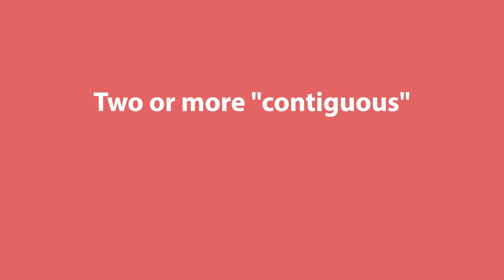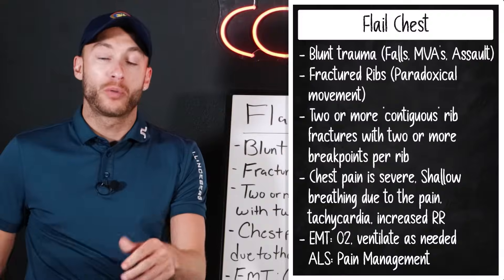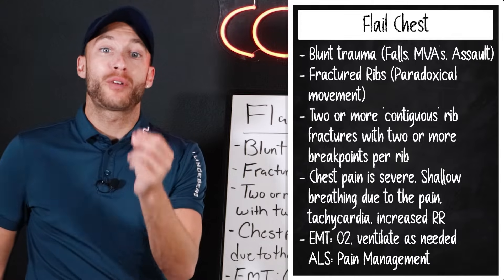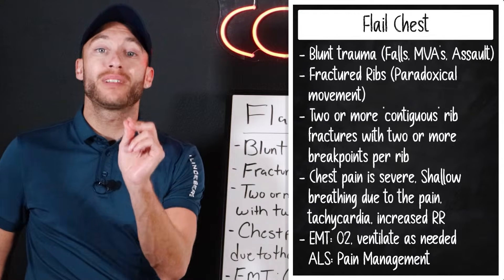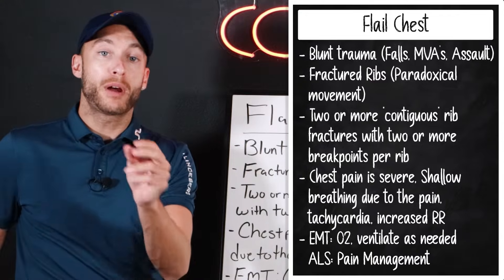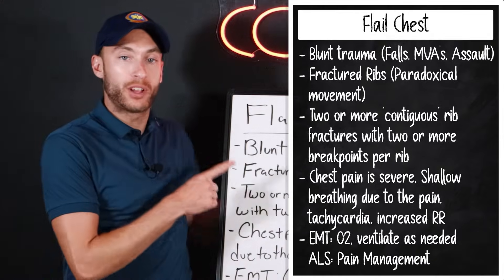Here's the definition: it is two or more contiguous — contiguous means next to — rib fractures. So we have two or more ribs right next to each other that are fractured in two or more places. Two or more break points on those ribs. That's what a flail chest is.